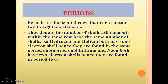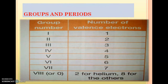Now let's look at periods. Periods are horizontal rows. These rows denote the number of shells that each atom of an element has. Hydrogen and helium both have one electron shell, so they're found in period one. Lithium and neon both have two electron shells, so they are found in period two. Periods denote the number of shells, while groups denote the number of valence electrons found in the outer shells.